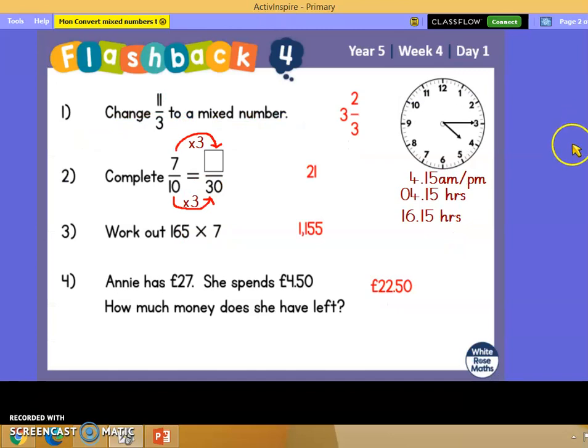Let's have a look at those answers. Change 11 thirds to a mixed number. How many 3's fit into 11? 3, 6, 9. That's 3 of them, 3 whole times. To get from 9 to 11 we add on 2 more, 2 more thirds.